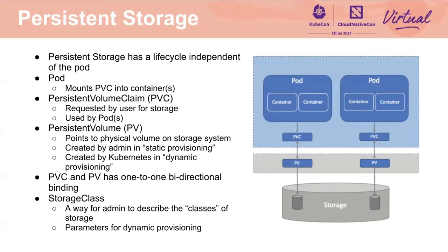Kubernetes storage provides a way for containers in the pods to consume block or file storage. Persistent storage is one type of storage that lives beyond a pod's life cycle. The terminologies we hear most in SIG Storage are probably PVC, PV, and storage class. PVC, persistent volume claim, is a user space object — it is a request by a user for storage. A PV, persistent volume, is a cluster scope object that represents a physical volume on the storage system. A PVC and a PV have a one-to-one mapping.